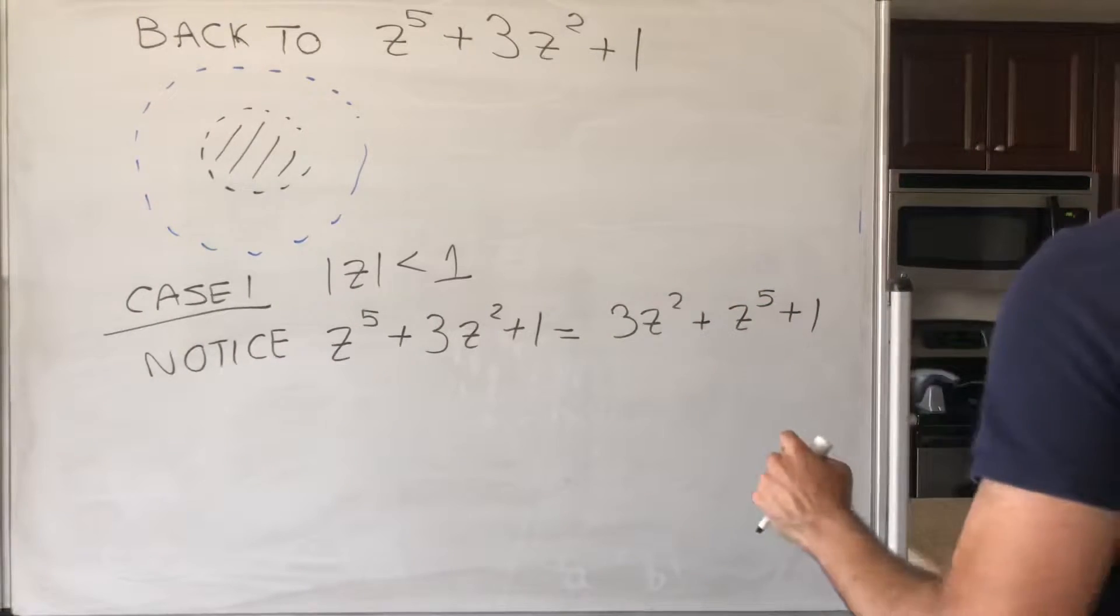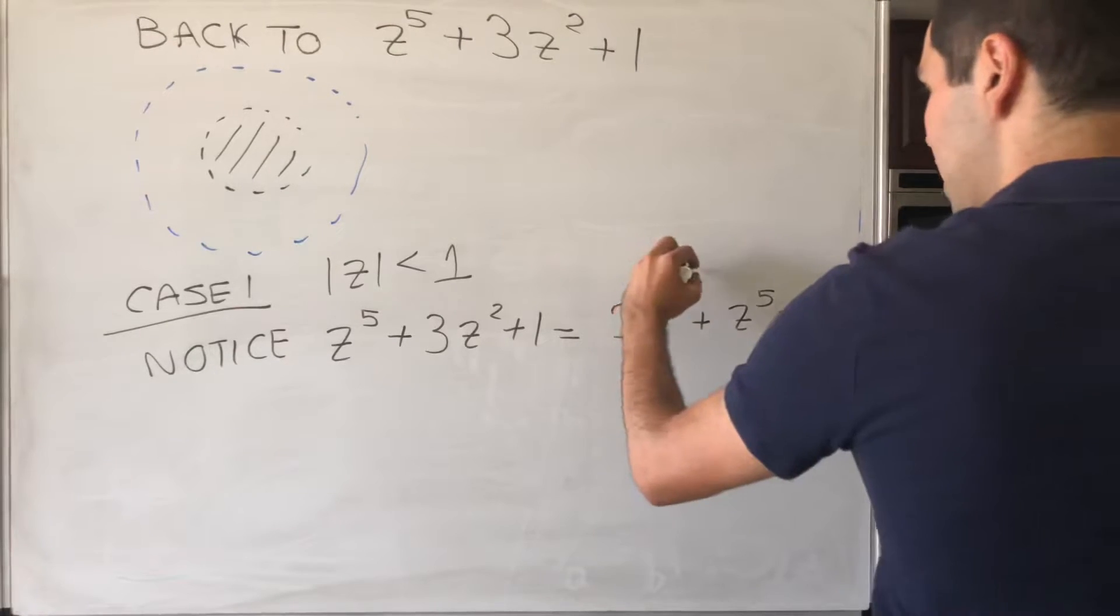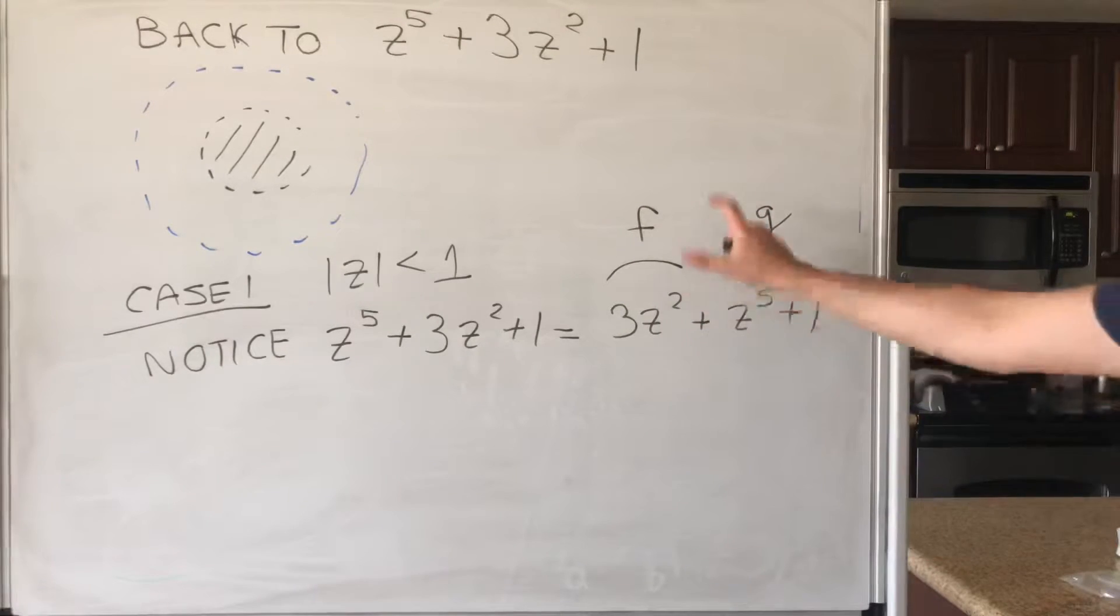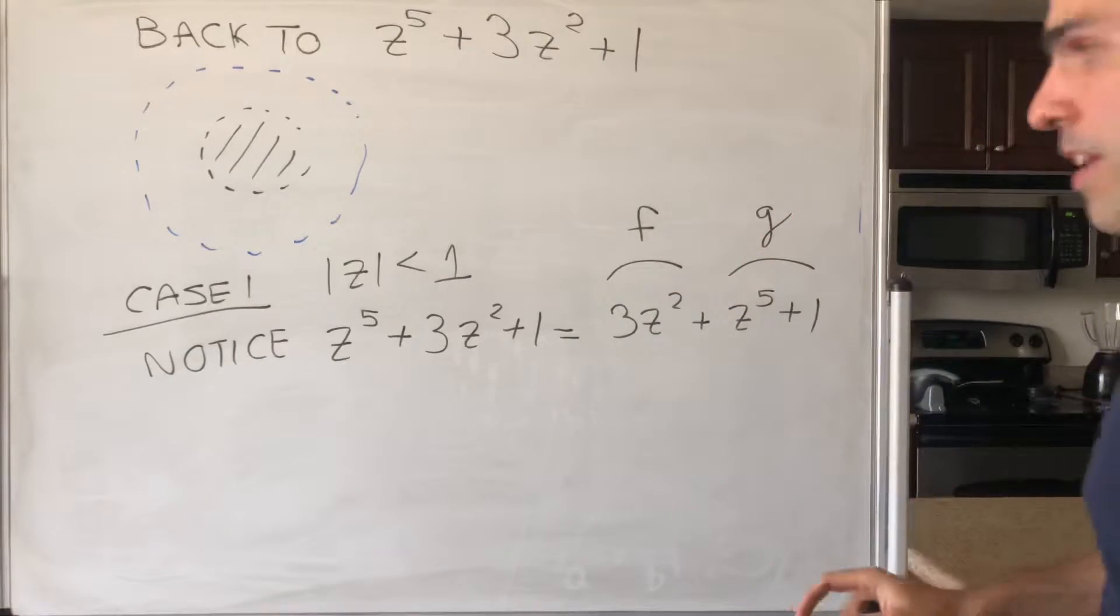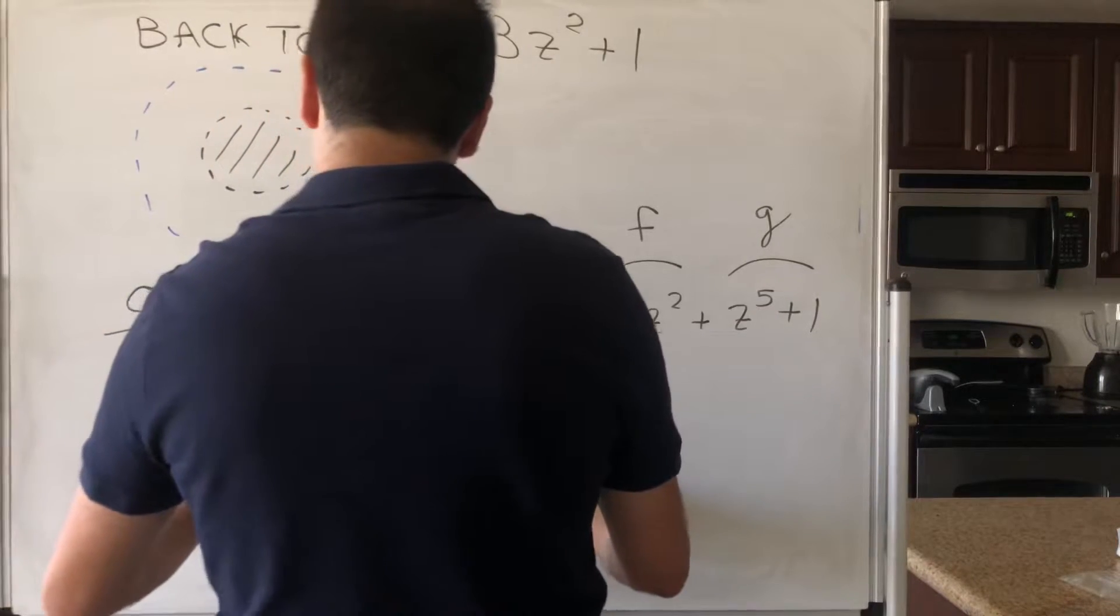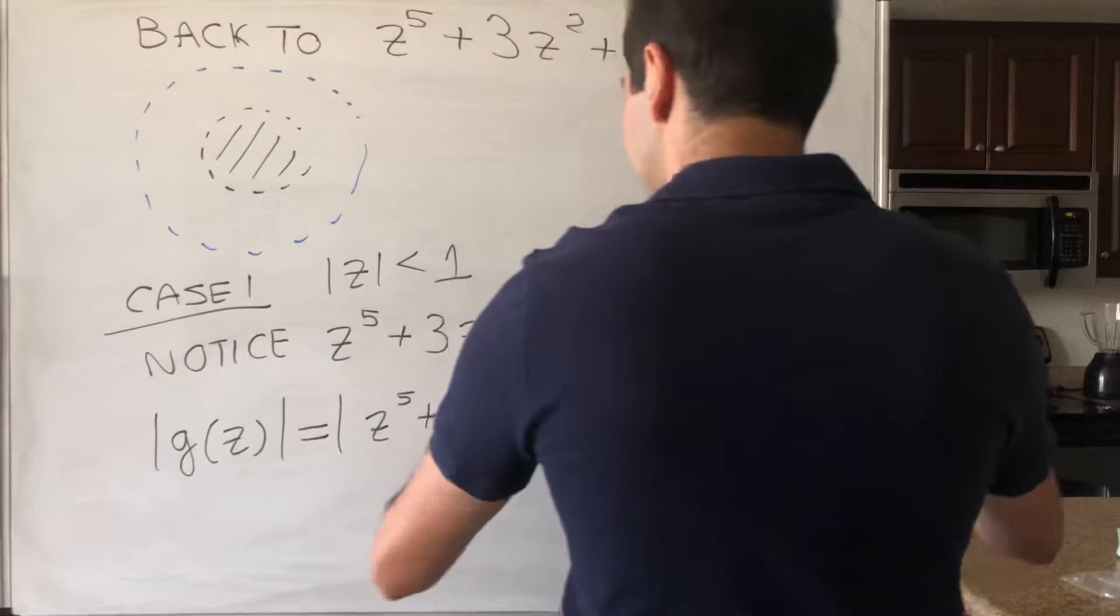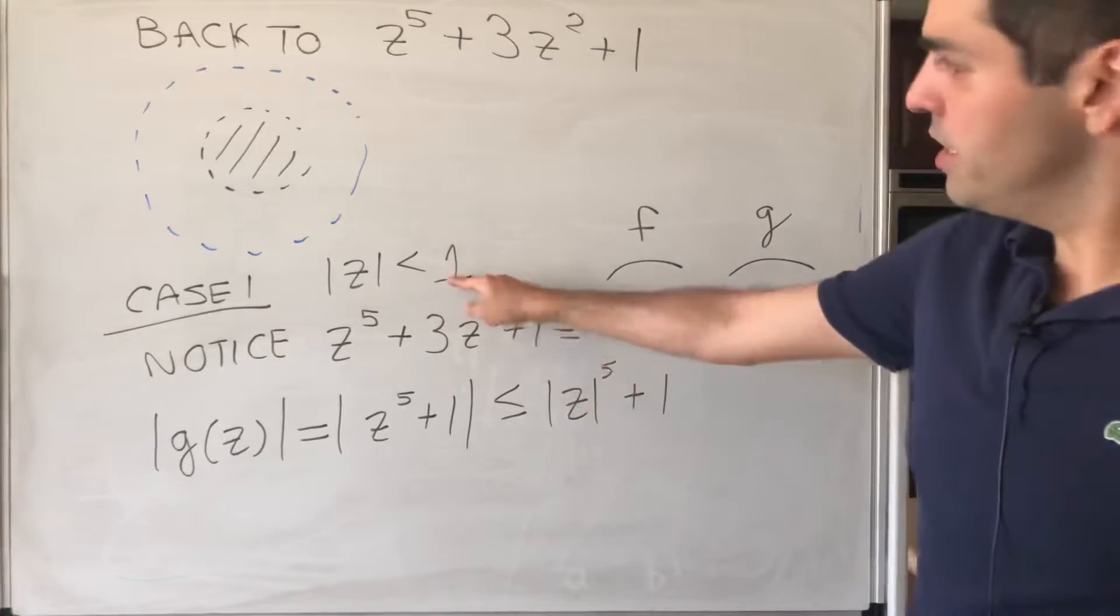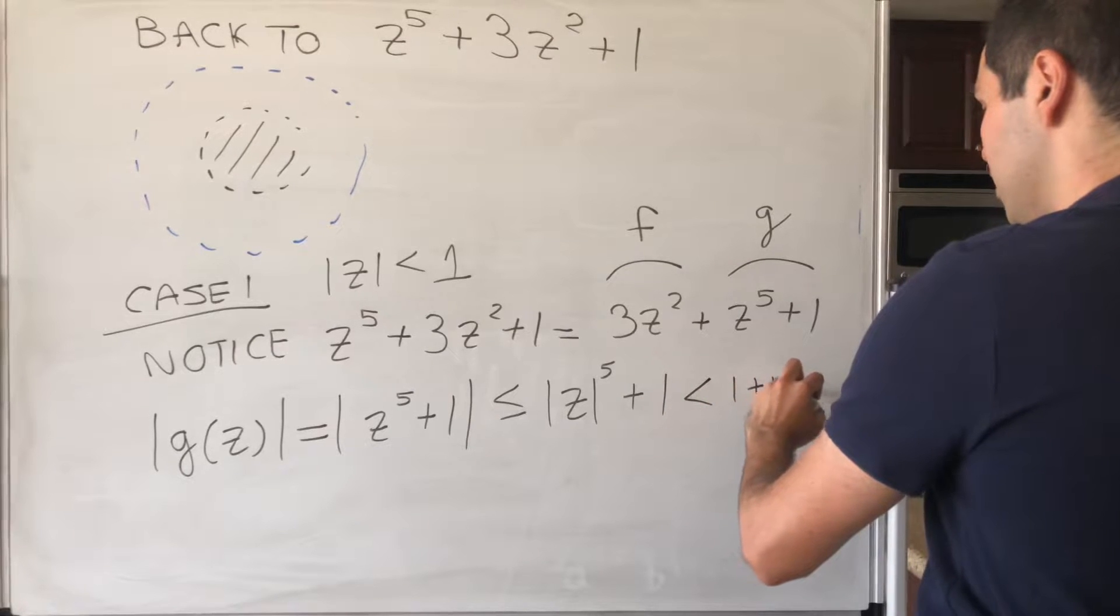So the idea is, this will be a function F, the bigger function, and this will be the function G. And all is good, except we just need to show that F dominates the function G. So if you take the absolute value of the smaller function G(z), that is z^5 + 1, and then this becomes less than or equal to |z^5| + 1. But since the modulus is small, this is less than 1 + 1, which is 2.